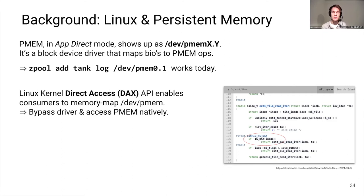What we see in this screenshot is an example from the ext4 source code, where there's a conditional optimization for PMEM — a different implementation for reading data from a file if the ext4 instance is deployed on PMEM.